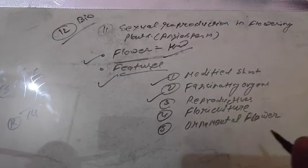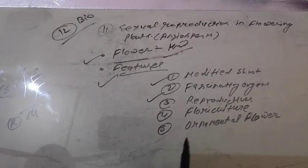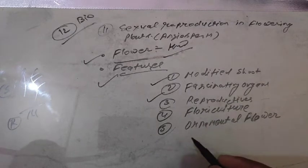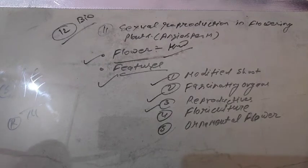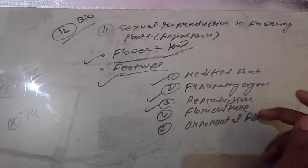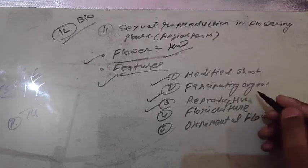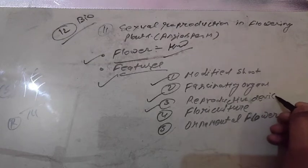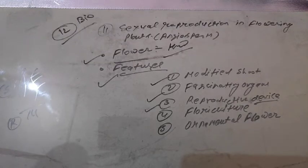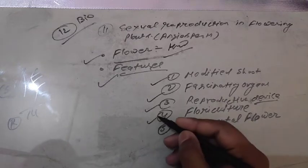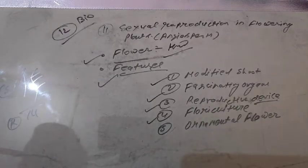Point three regarding the features of flowers: flowers consist of reproductive devices. Reproductive devices means the equipment that helps for the reproduction process. You already have a pre-mindset regarding this — the androecium and gynoecium are actually the reproductive devices. So don't be confused regarding this.